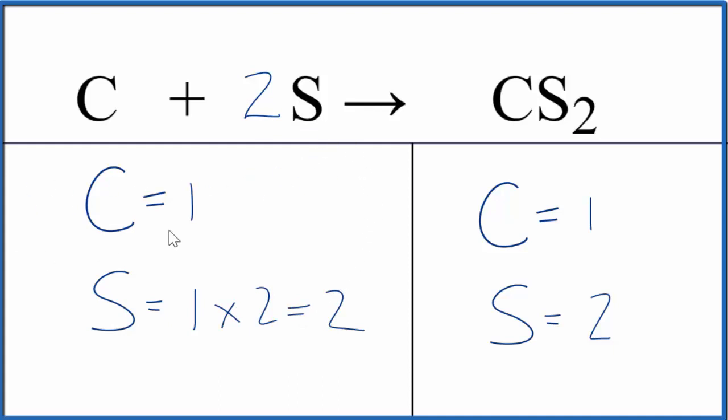Let's get rid of that one. If you want to write the states, these would both be solid starting out and then carbon disulfide. At room temperature, this is a liquid, but because you'd heat this up to make these two react, this would be a gas, at least initially. When you cooled it down, you'd have a liquid.